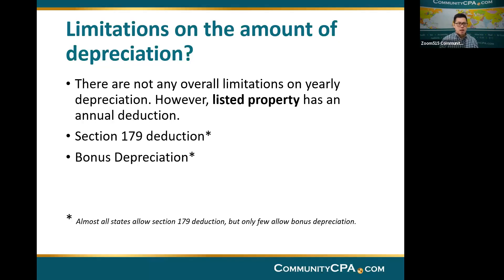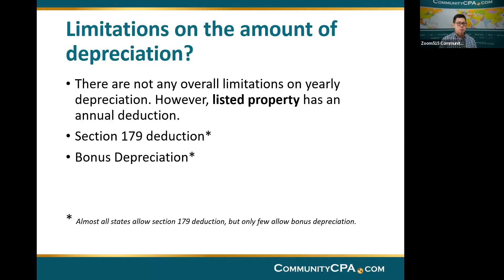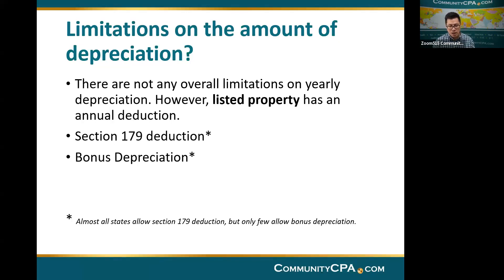In 2023, bonus depreciation is only 80%. This number decreases 20% per year — so 2024 is 60%, 2025 is 40%, 2026 is 20%, and by 2027, unless there is a change in the law, bonus depreciation will be 0%. You will no longer be allowed to take bonus depreciation, but you will still be allowed to take Section 179 if the law permits.